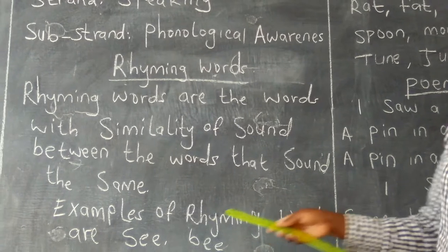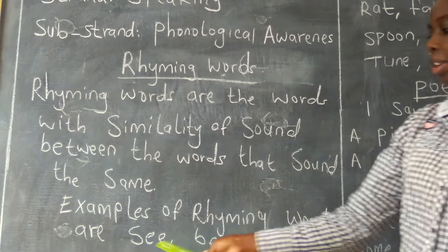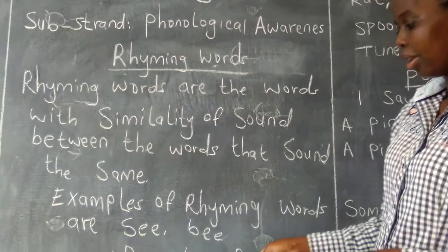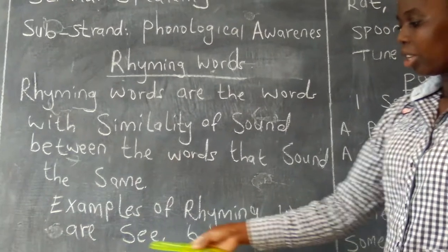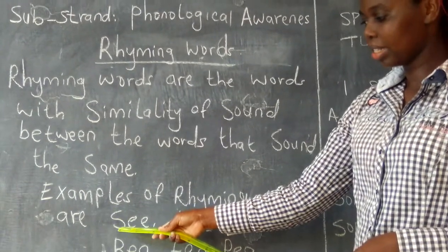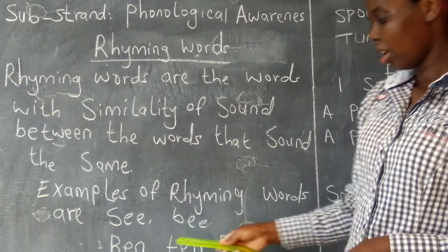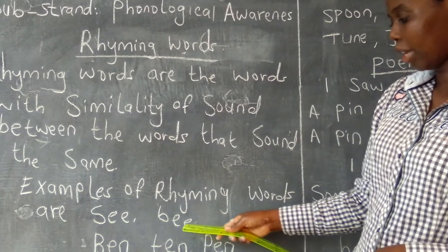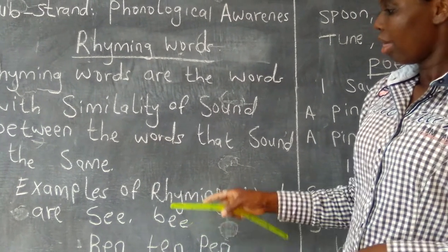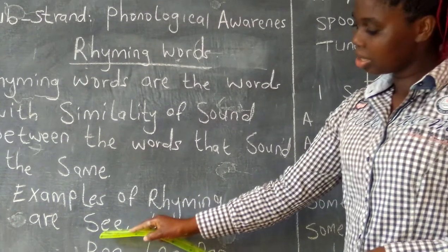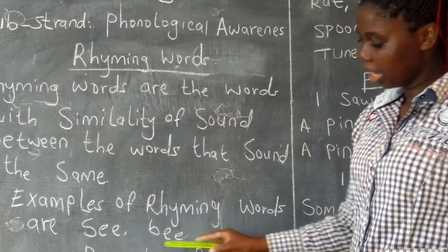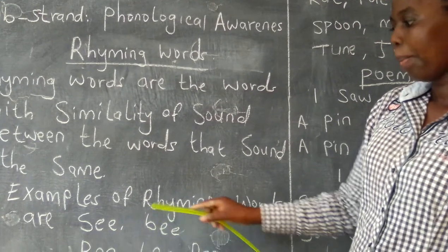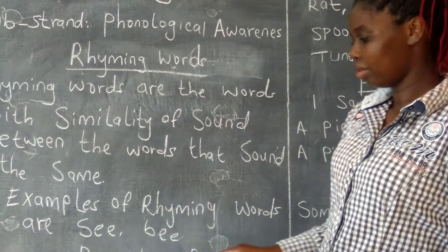We have 'see' and 'bee'. You can see in the first word, 'see', we have double E here. And on the second word, 'bee', we also have double E. So these sounds — the E in 'see' and the E in 'bee' — make these words rhyme.